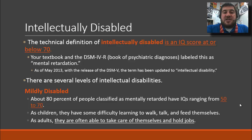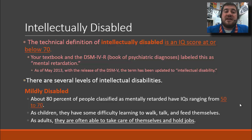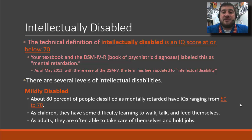The technical definition of intellectually disabled is an IQ at or below 70. This used to be referred to as mental retardation in the DSM-IV and older textbooks, but that term is no longer accepted. As of May 2013 with the release of the DSM-5 — the book of psychiatric diagnoses — the term has been updated to intellectual disability so as to no longer be offensive.